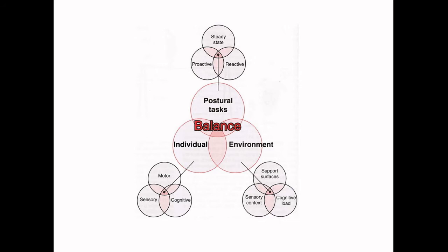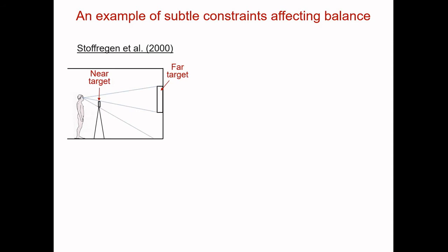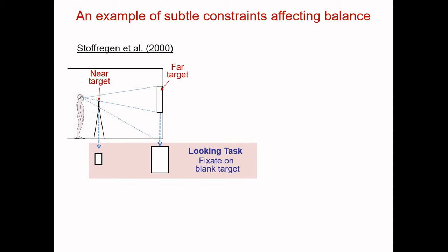A key prediction of the systems theory is that the form and functionality of balance will depend upon the interaction of multiple relevant constraints. This allows us to appreciate not only the most obvious effects upon balance, but also some of the more subtle ones. Let's look at an example from a study performed by Tom Stoffrigan. In the study, a person stands in a room and looks either at a near target or a far target. The first task was a looking task, where the participant looks directly at a nearby small sheet of paper or further away at a larger sheet of paper.